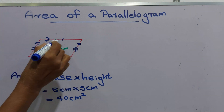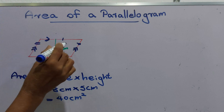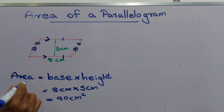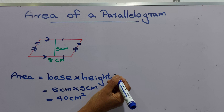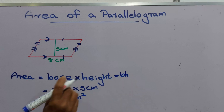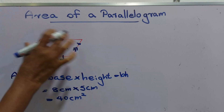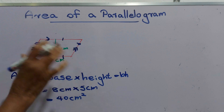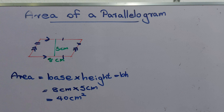A parallelogram means opposite sides are equal and parallel. The area is given by B times H — base into height. It is a 2D shape, meaning only two-dimensional shapes are involved in a parallelogram.